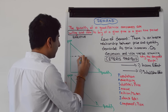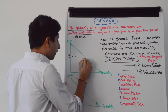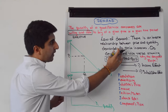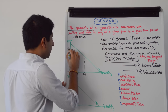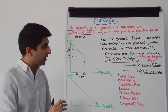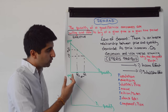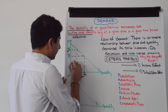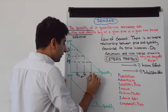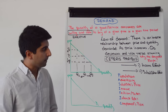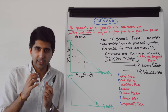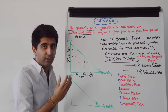Let's take an initial price. At a price of P1, quantity demanded is at Q1. To show this inverse relationship — the law of demand — as the price increases from P1 to P2, the demand curve shows that quantity demanded decreases from Q1 to Q2. Similarly, if price decreases from P1 to P3, there is an increase in quantity demanded from Q1 to Q3. This demand curve clearly illustrates the law of demand.